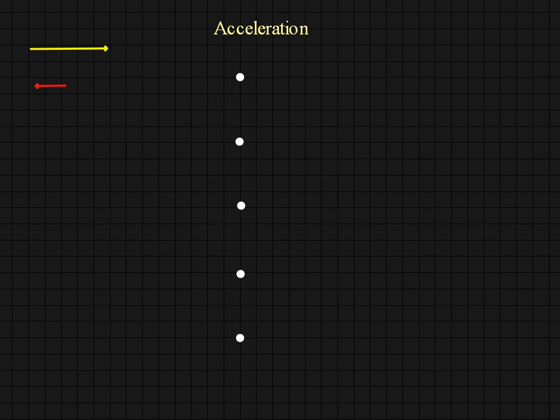I want to continue talking to you now about acceleration and how it relates to velocity. For this example, what we're going to do is consider the velocity change for an object over a period of five seconds. We've got these dots here to represent four different time intervals, so it's actually four seconds. We'll say that this is for maybe a car or something, and initially it's going to be moving to the right.